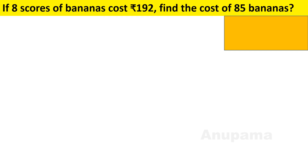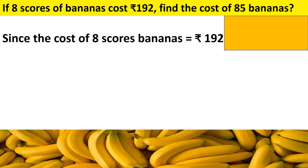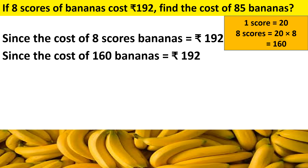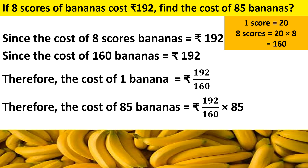Let us do one more question. If 8 scores of bananas cost Rupees 192, find the cost of 85 bananas. The cost of 8 scores of bananas equals Rupees 192. Now, 1 score equals 20, so 8 scores equals 8 into 20, which is 160. So the cost of 160 bananas is Rupees 192. We will find out the cost of 1 banana: 192 divided by 160. Then the cost of 85 bananas is 192 divided by 160, multiplied by 85.